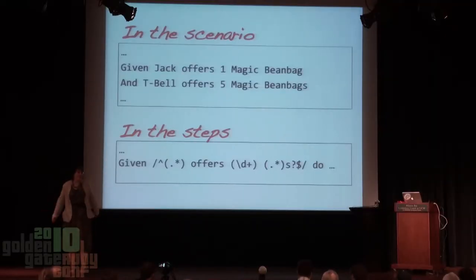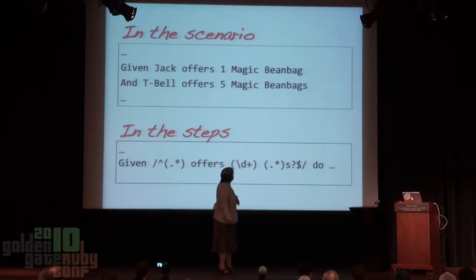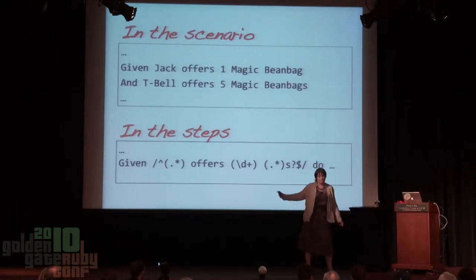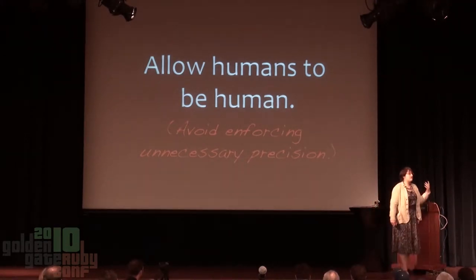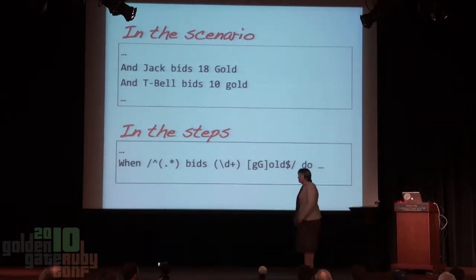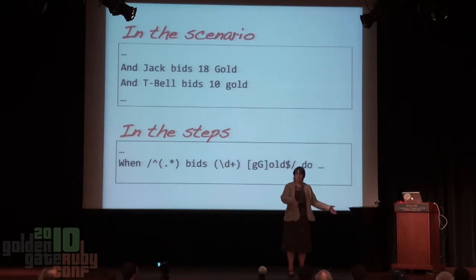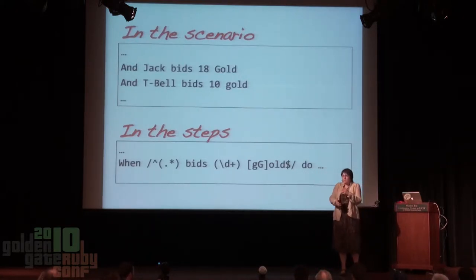Fortunately this is relatively easy to do thanks to the fact that Cucumber works with regular expressions — they bend my mind almost as much as closures, but they're incredibly useful. We can pull out the salient bits just by expressing them in a regular expression. Similarly, let's avoid enforcing unnecessary things — does it really matter if we capitalize 'gold'? Through the magic of regular expressions we can make it so that it doesn't enforce that constraint unless it's important. We don't want people wondering why they can't express their ideas without getting lots of red all over the screen.